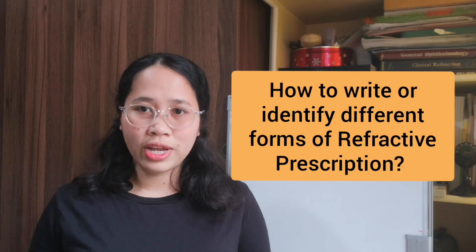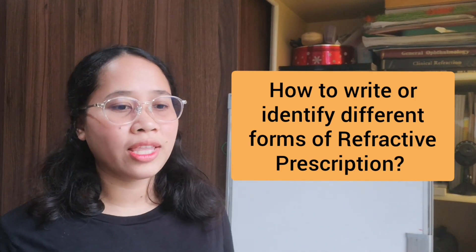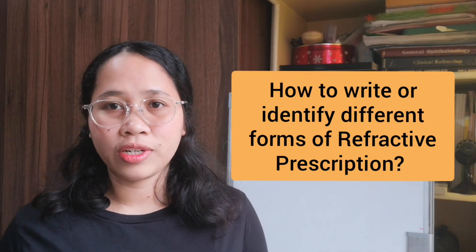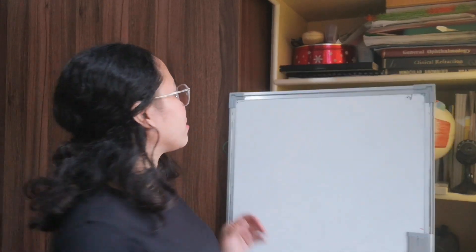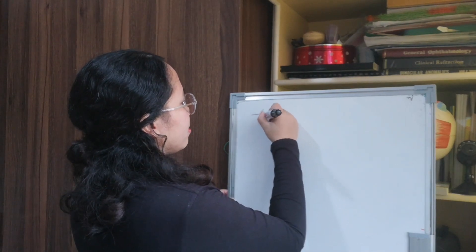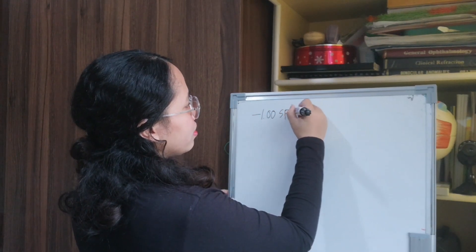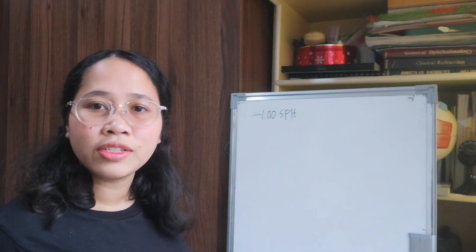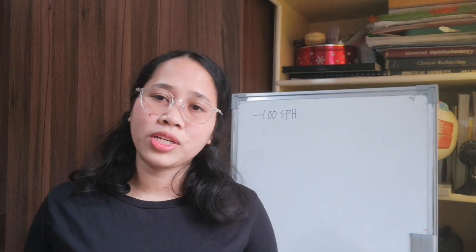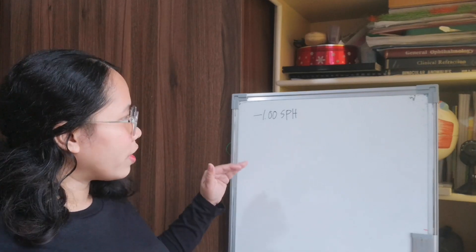How do you write a sphere? For example, your patient has a minus one diopter grade for distance. So you write it as minus one sphere — we use SPH as a shortcut for sphere.